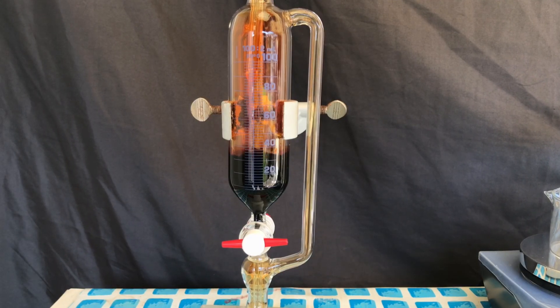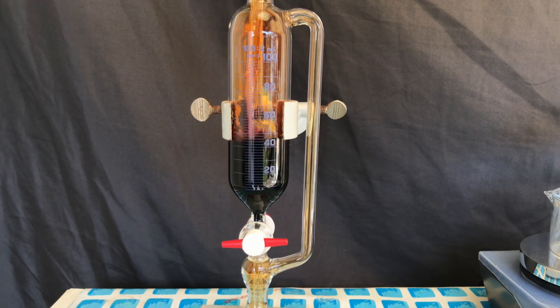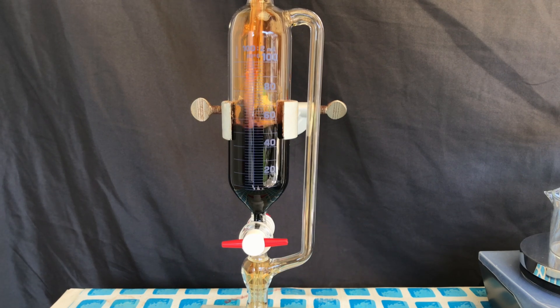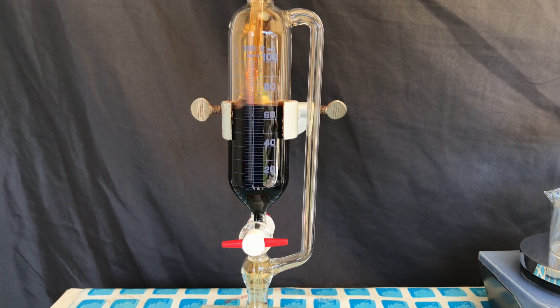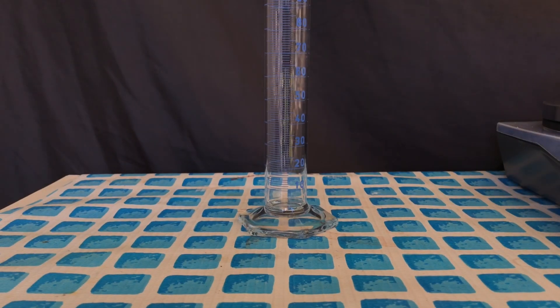To make this reaction more efficient and also a little tamer, DCM was added to the bromine. Dichloromethane is a good inert solvent for brominations and you could also use trichloromethane or even tetrachloromethane.